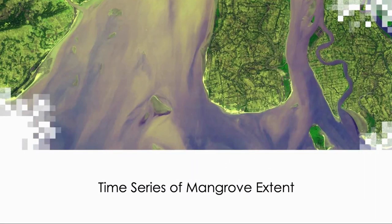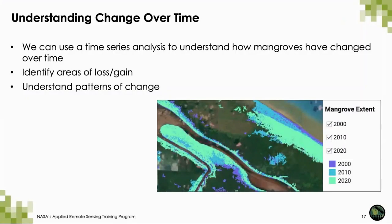Now we'll be moving into actually performing the time series of mangrove extent. We want to perform a time series because we want to understand change over time. As discussed in the last part of the workshop, mangroves change over time due to different natural and anthropogenic effects. We can use a time series analysis to understand how mangroves have changed, identify areas of loss and gain, and understand patterns of change to see if those changes are linked to any particular source we are interested in studying.